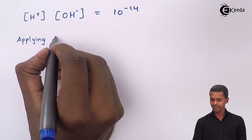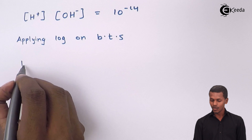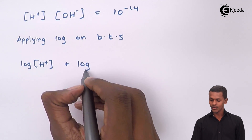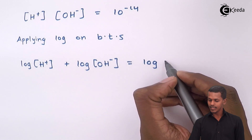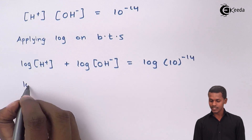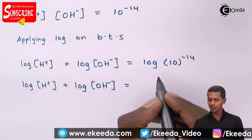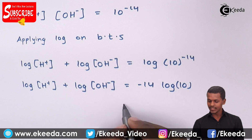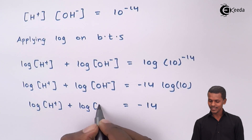If we apply log on both sides, since we have a multiplication, we can write it as: log[H⁺] + log[OH⁻] = log(10⁻¹⁴). This gives us log[H⁺] + log[OH⁻] = −14 × log(10). Since log(10) = 1, we can write this as log[H⁺] + log[OH⁻] = −14.